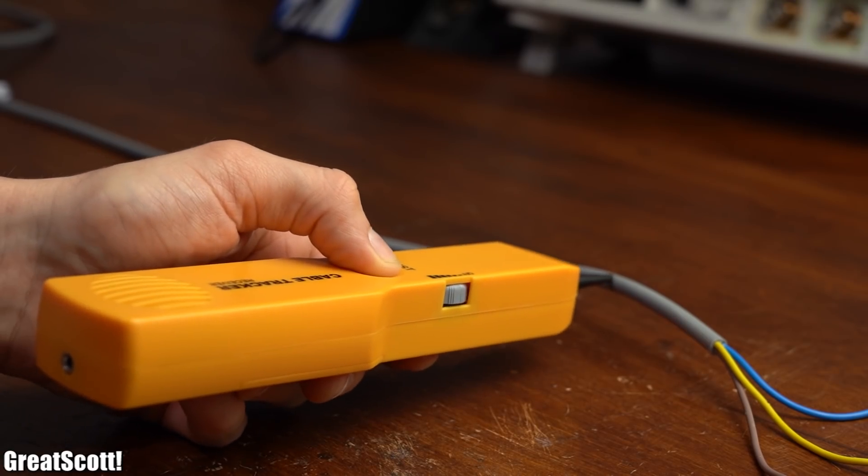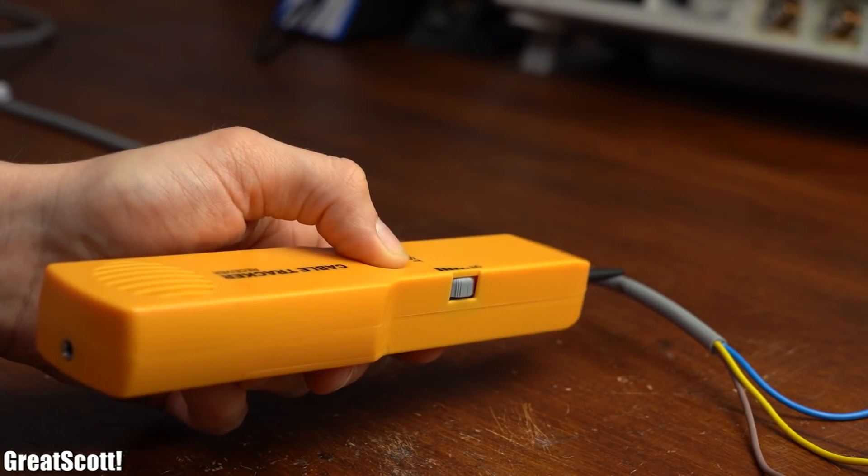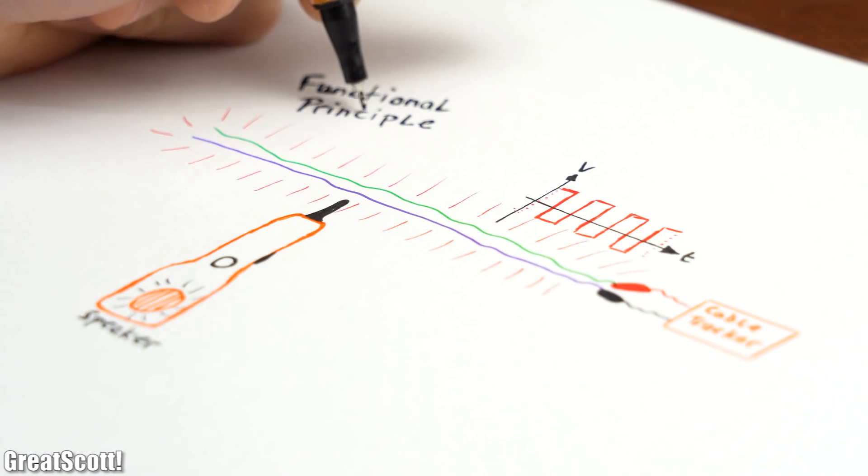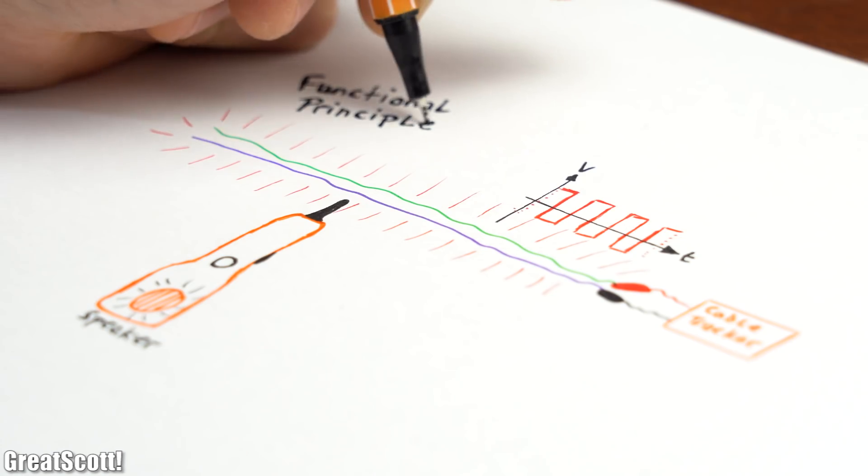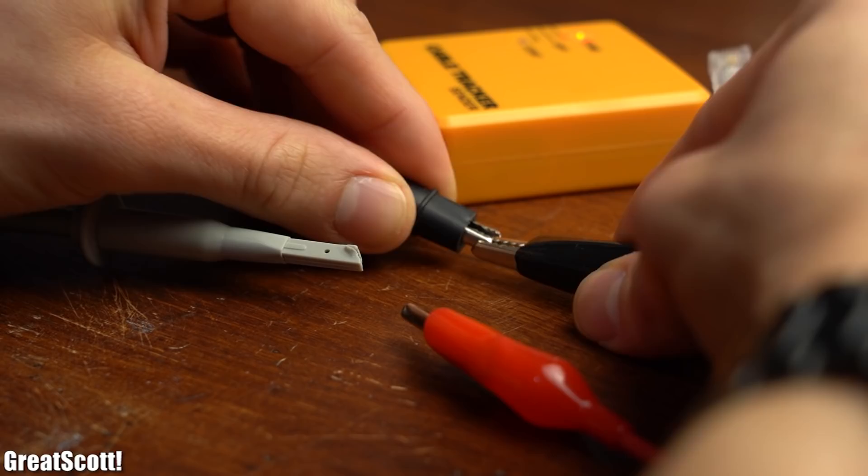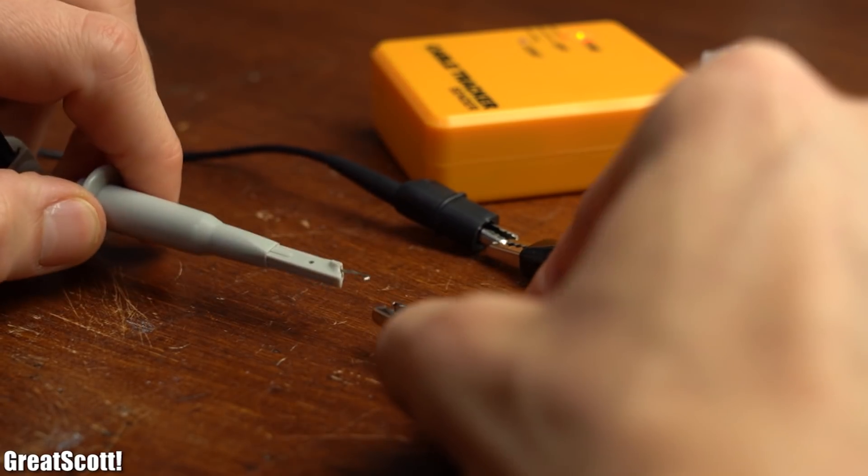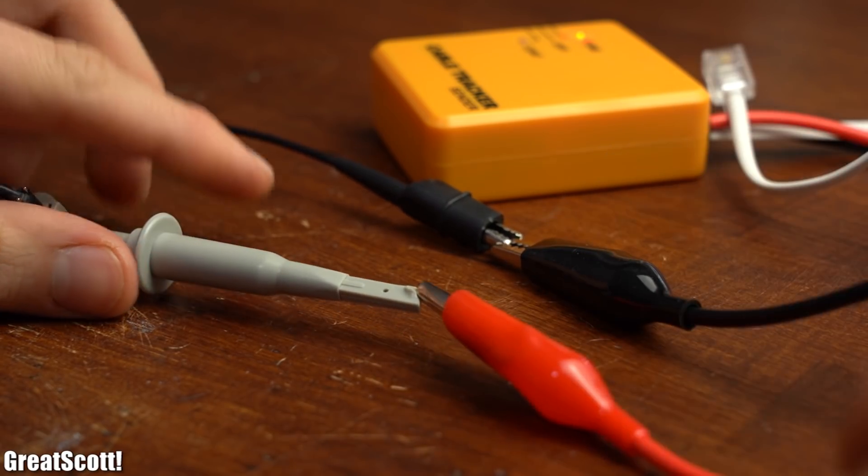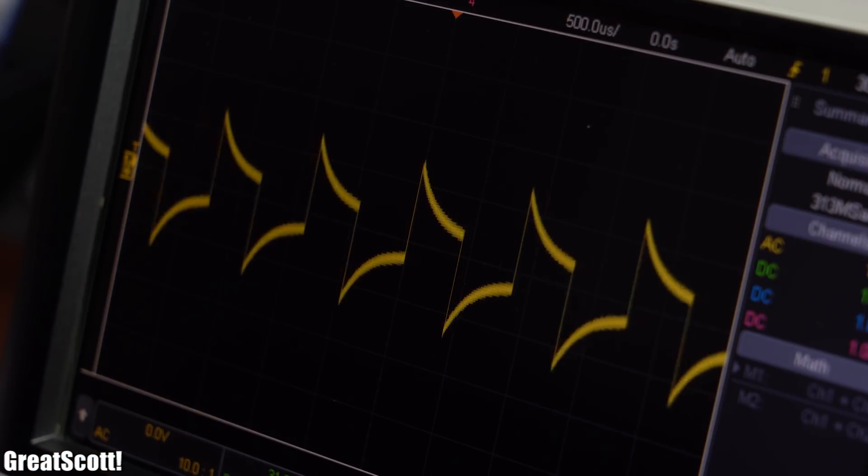Now the receiver uses its own antenna to pick this waveform up and place it back on a small speaker. Of course, the closer you get to the wires, the more the receiver will pick up. Just like that, you should now understand the simplified functional principle of this cable tracker.